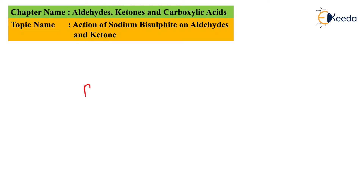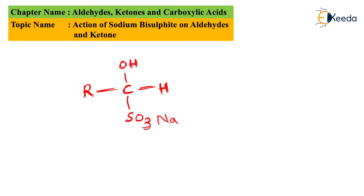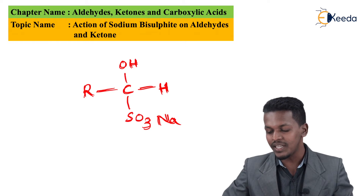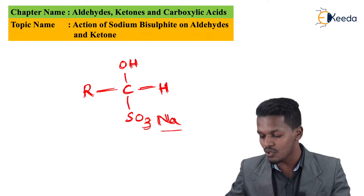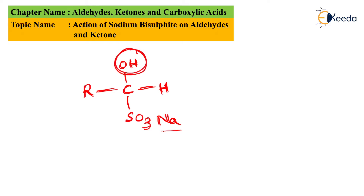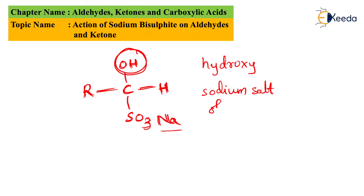The product obtained consists of R-C(-OH)(-H)(-SO3Na). The R-CH group was already present in the aldehyde; the OH gets attached and SO3Na also gets attached to that carbon. So the product is a sodium salt of sulfonic acid where OH is attached to the carbon atom — it can be called a hydroxy sodium salt of sulfonic acid.